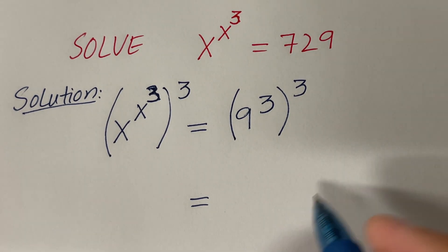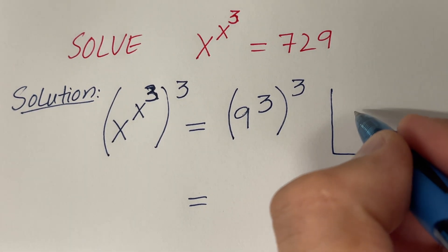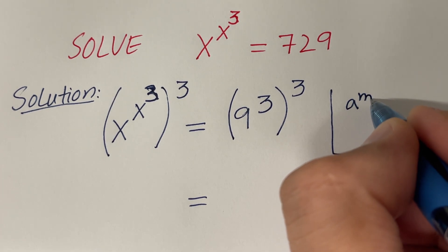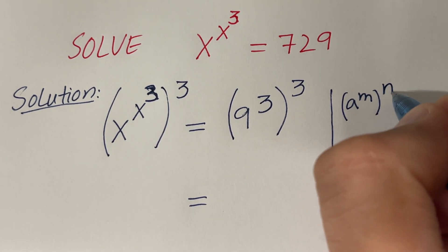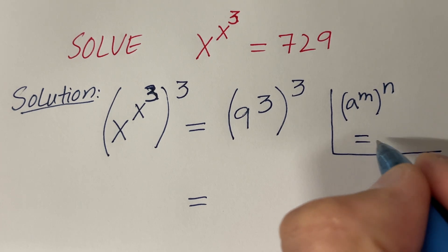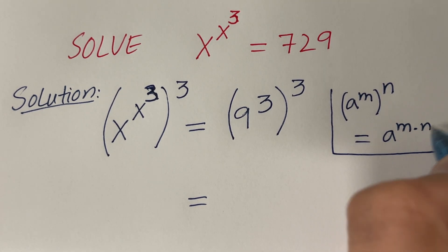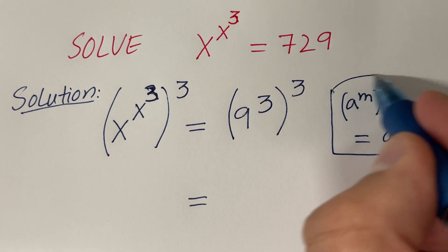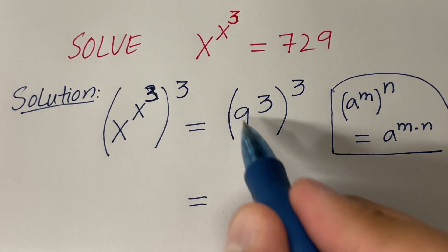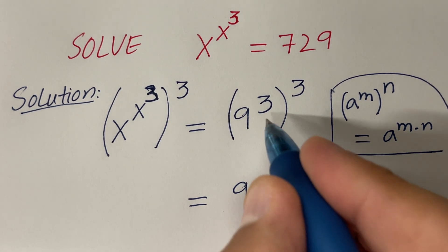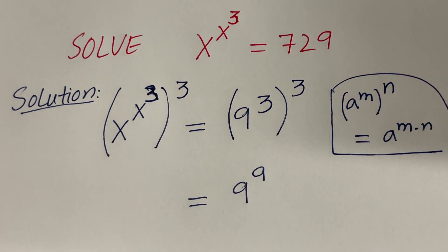Now let's simplify. On the right hand side I can use this property of indices that says a raised to the power m raised to the power n is equal to a raised to the power m times n. So just multiply these exponents — if you have parentheses like this, then just multiply these exponents. So 3 times 3 is 9.